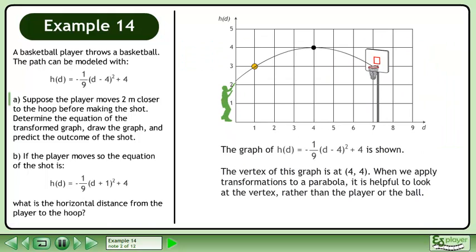The graph of h(d) = -1/9(d - 4)² + 4 is shown. The vertex of this graph is at (4, 4). When we apply transformations to a parabola, it is helpful to look at the vertex rather than the player or the ball.